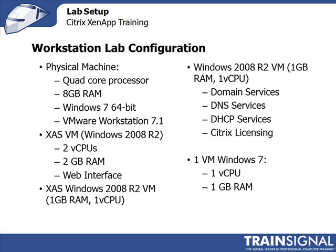I'm also going to have one virtual machine running Windows 7 with one vCPU and about 1GB of memory. This will act as the client so that when we go through lessons installing certain plugins or clients, we can simulate that from a VM running Windows 7.